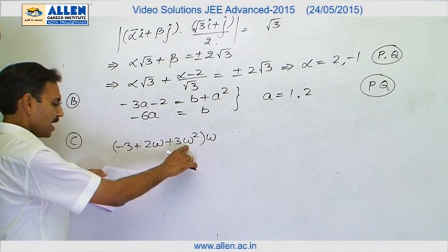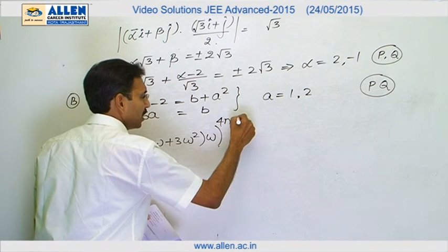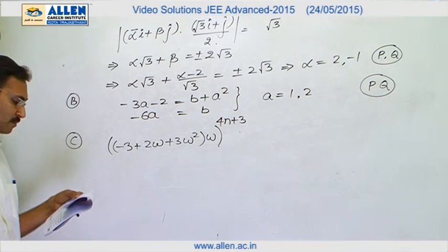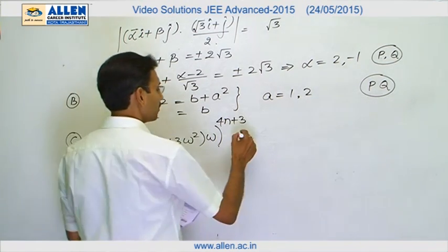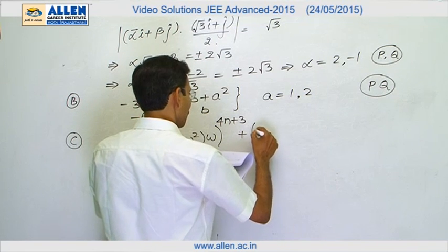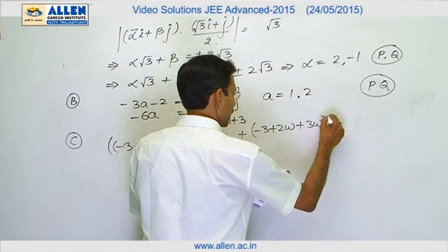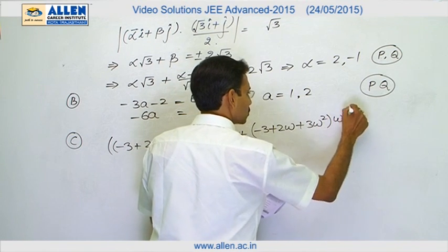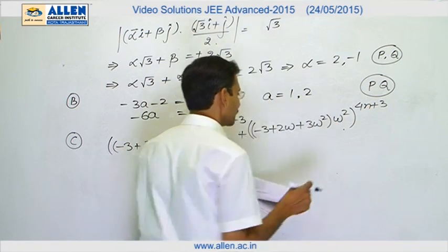base of the first term minus 3 omega, 2 omega square and 3, and I will say I have written the first term in terms of the last term because this factor is for the last term. In the similar way, I will use the second one. It can be written as minus 3 plus 2 omega plus 3 omega square multiplied by omega square raised to the power 4n plus 3. Now,